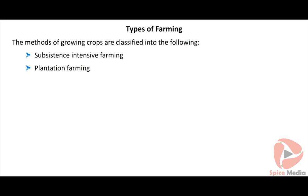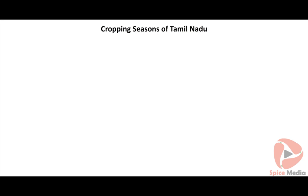Mixed farming is where the land is allotted for more than one activity along with agriculture. Mixed farming is common in the Kaveri Delta. Market gardening includes growing of fruits, vegetables, and flowers.